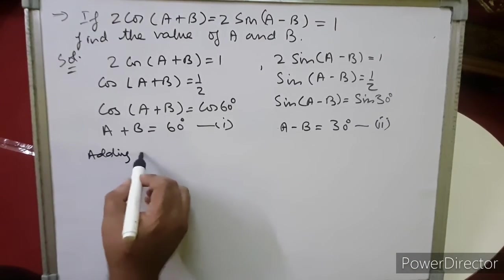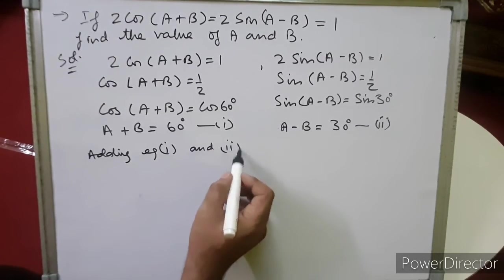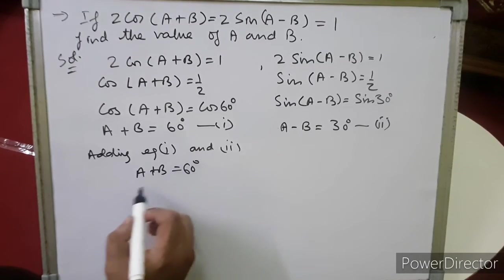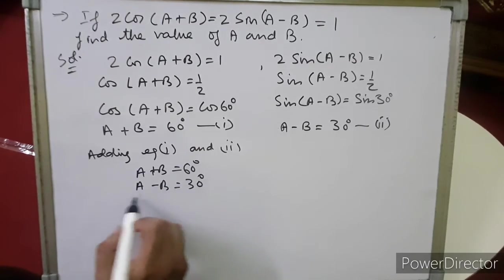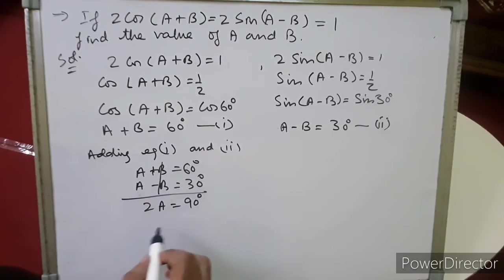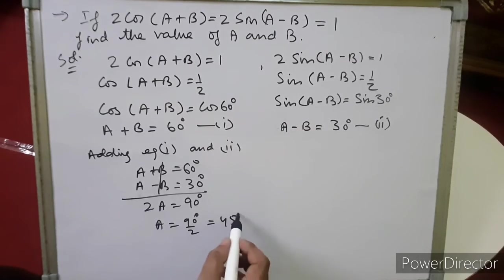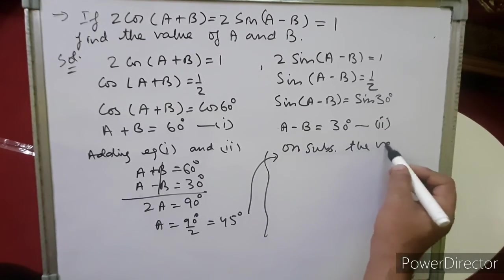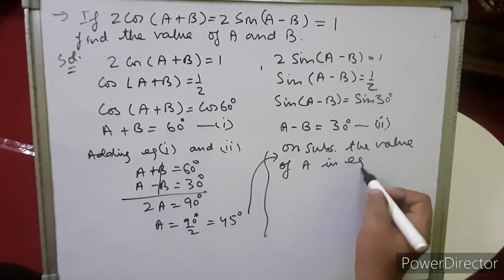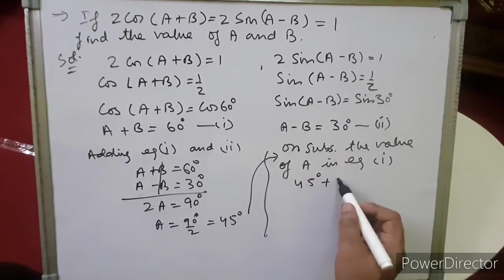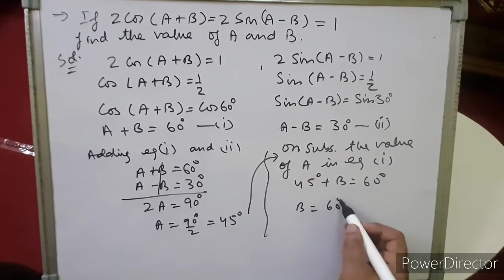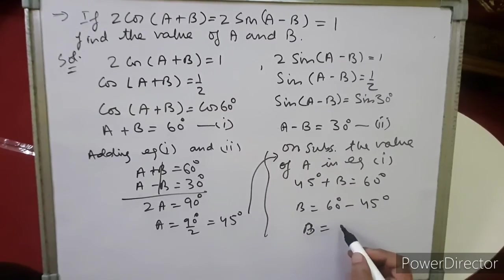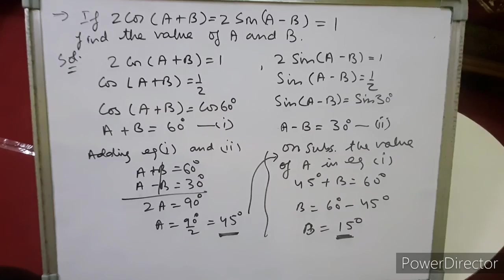Adding equation 1 and equation 2: (a + b) + (a − b) = 60° + 30°. The b terms cancel, giving 2a = 90°, so a = 45°. Substituting a = 45° into equation 1: 45° + b = 60°, so b = 15°. Both values of a and b have been found: a = 45° and b = 15°.